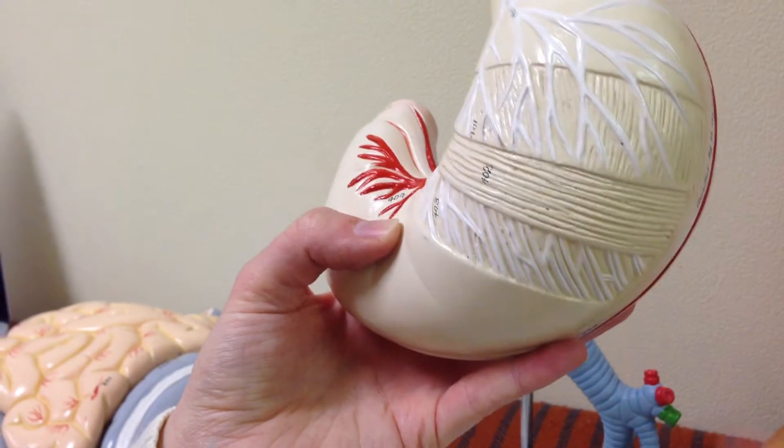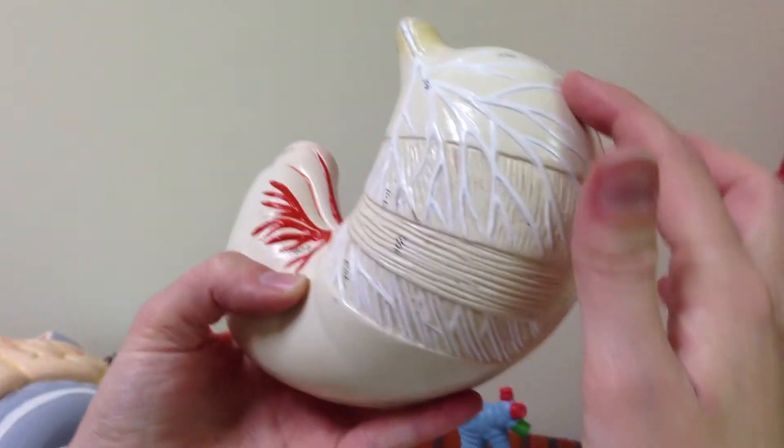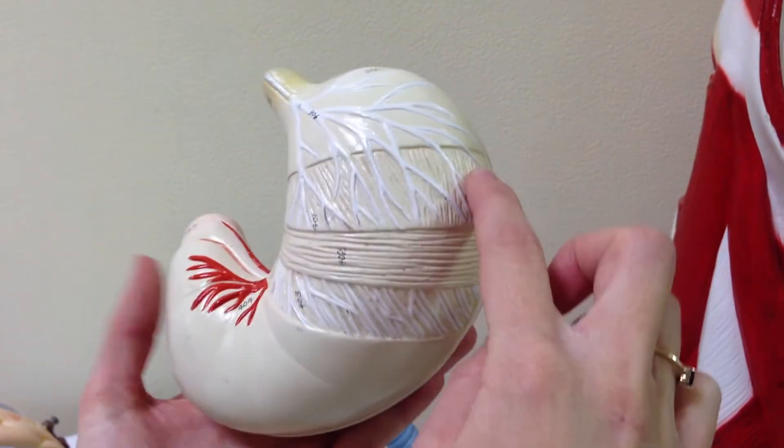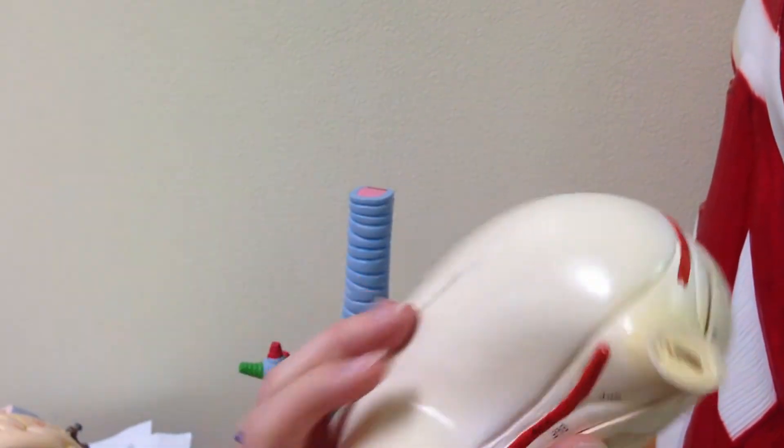Okay. Fundus. So right here is the fundus, and then this whole thing right here is the body. Inside here is the rugae, the ridges, and that helps to increase surface area.